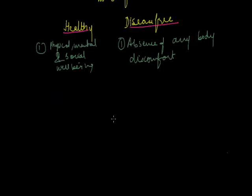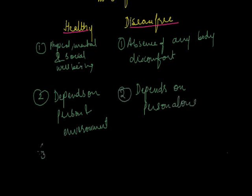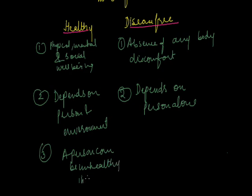The second point of differentiation: health depends upon the person and one's environment, including society. On the other hand, for a disease-free person, it depends upon the person alone. The third point: a person can be unhealthy even in the absence of disease, whereas a person would be disease-free in the absence of discomfort.